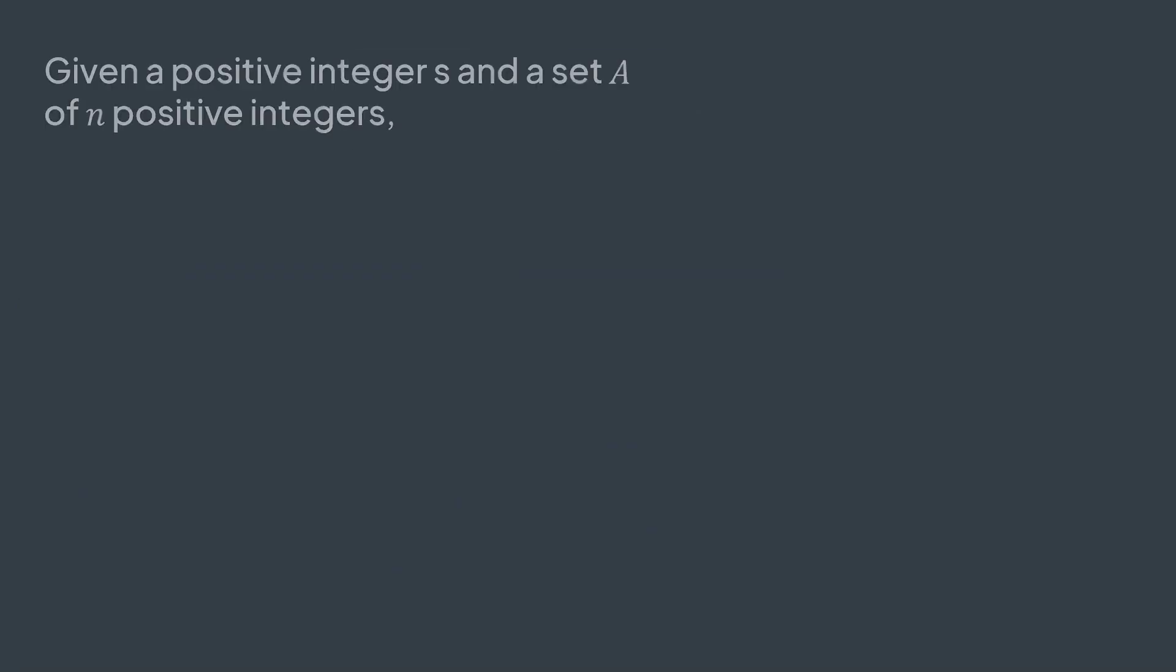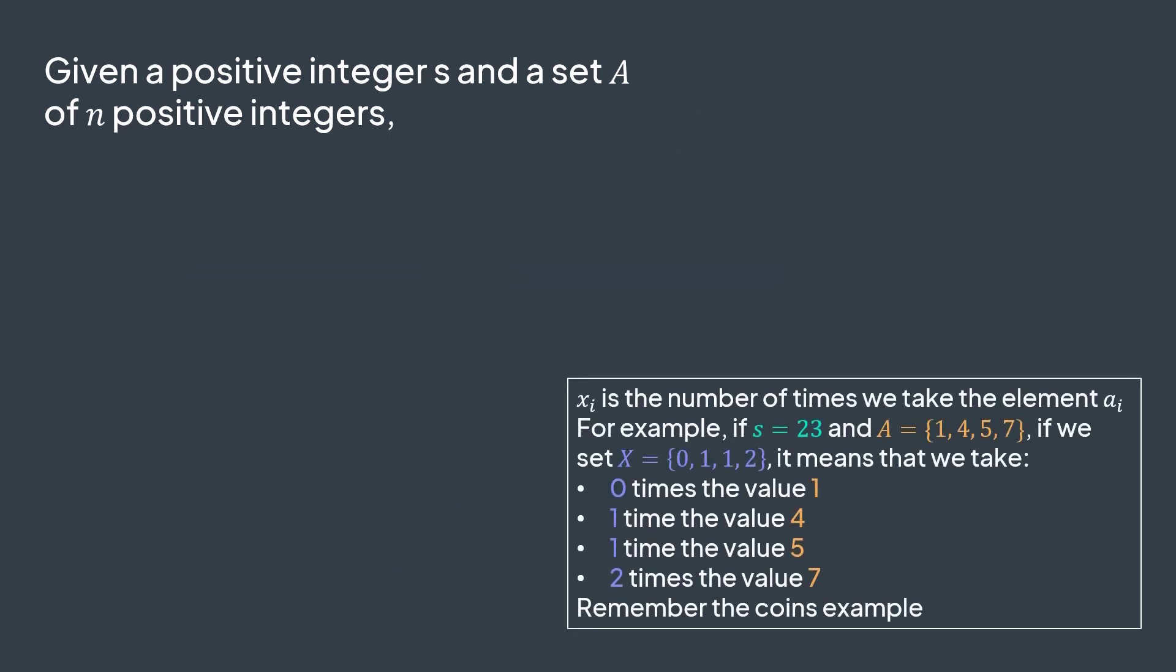Okay, as input we have a positive integer s, and a set of positive integers a. What do we want to produce? We want to attribute a value x to each element of the set a. It represents the number of occurrences. How many times do we take it? So it has to be positive. The number of occurrences cannot be below zero.